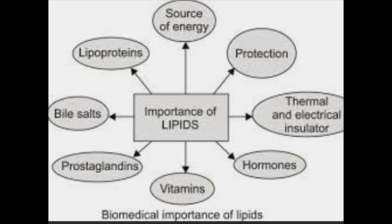A lot of energy comes from lipids — the stored fat. Number two, they have been implicated in the synthesis of a lot of hormones in the body. For example, estrogen, progesterone, and other sex hormones all require lipids for their production. Vitamin D synthesis also needs lipids. They are also an important integral part of the cells as well.